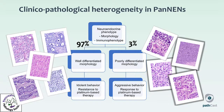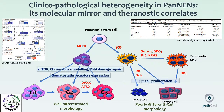In the pancreas, well-differentiated NEMs are the large majority. They have an indolent or moderately aggressive behavior and are resistant to platinum-based therapy. Poorly differentiated NEMs, a small subset in the pancreas, have a very aggressive clinical behavior and respond — at least initially — to platinum-based chemotherapeutics. Well-differentiated pan-NEMs are driven by mutations in the MEN1 gene, and may also show alterations in the mTOR complex, chromatin remodeling, and DNA damage repair systems. They also express somatostatin receptors.